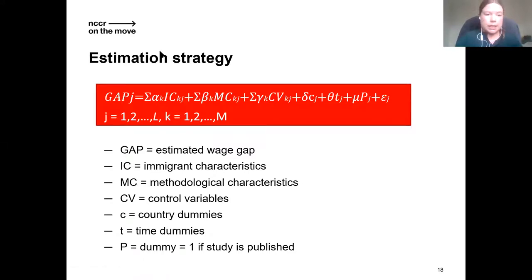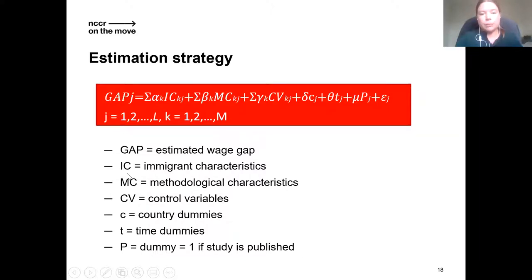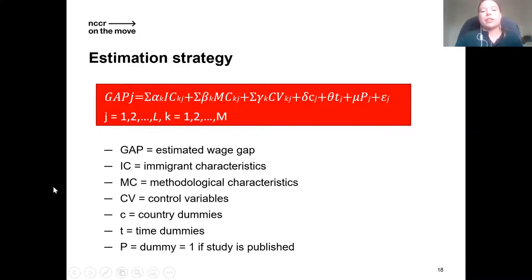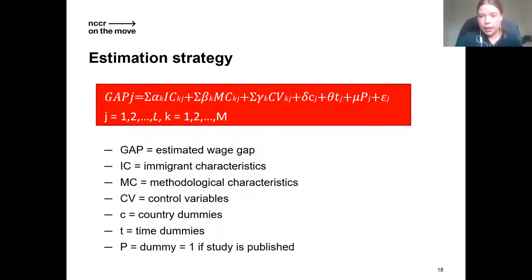We put these estimates into a regression analysis where the outcome is the estimated wage gap, and we control for a number of characteristics of the papers: the type of immigrant they look at, the methodology used, the control variables, the country of the estimates, and the time period. Finally, we include a dummy which is one if the paper is published, to see whether there is publication bias — one could imagine that only papers estimating a significant wage gap actually get published.